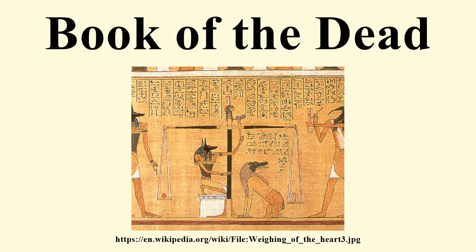The spells in the Book of the Dead depict Egyptian beliefs about the nature of death and the afterlife. One aspect of death was the disintegration of the various kheperu, or modes of existence. Funerary rituals served to reintegrate these different aspects of being. Mummification served to preserve and transform the physical body into the sah, an idealized form with divine aspects. The Book of the Dead contained spells aimed at preserving the body of the deceased, which may have been recited during the process of mummification. The heart, which was regarded as the aspect of being which included intelligence and memory, was also protected with spells.